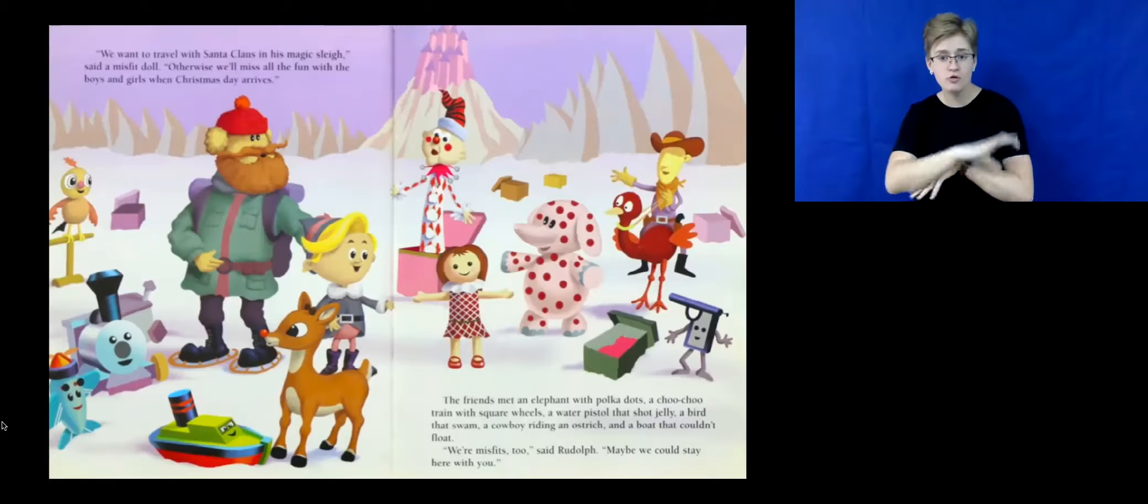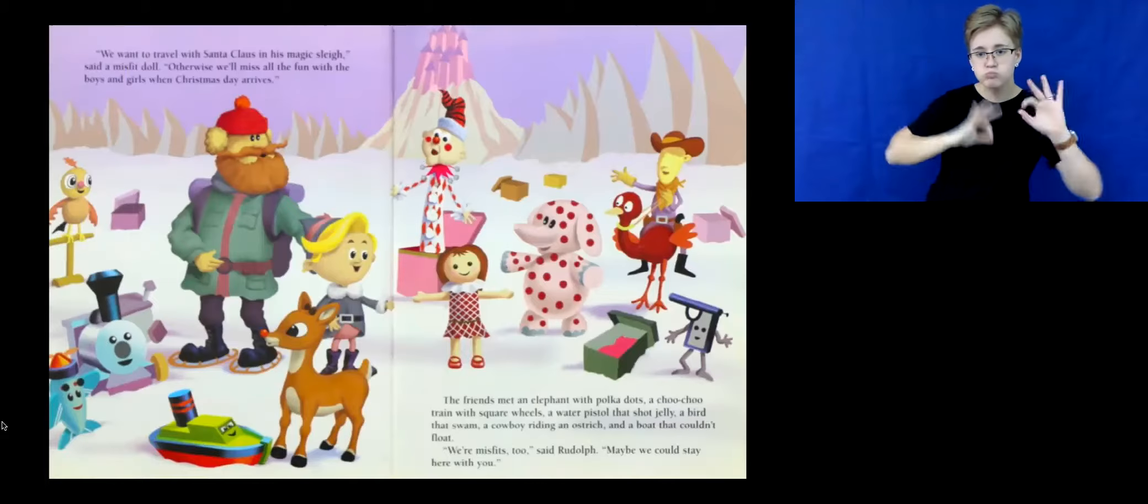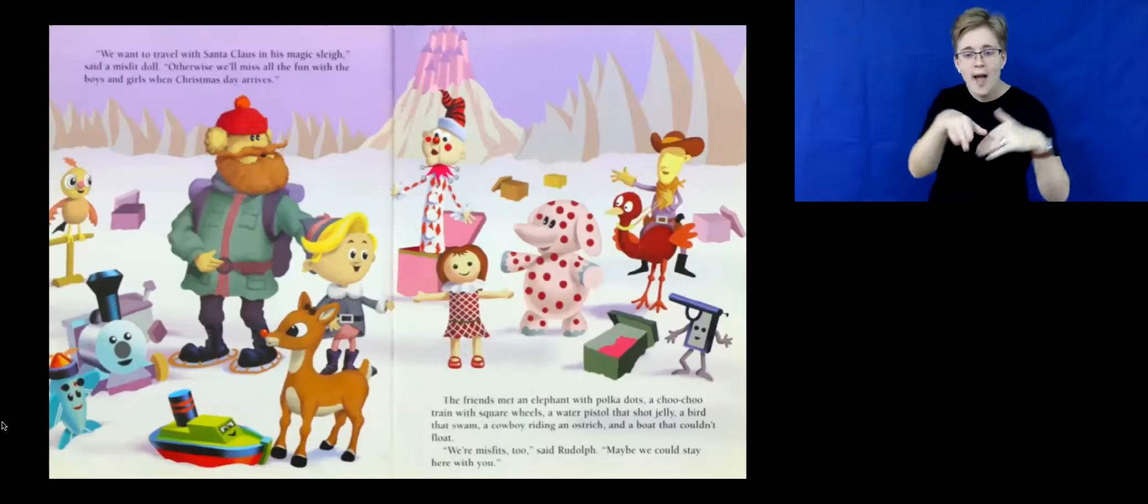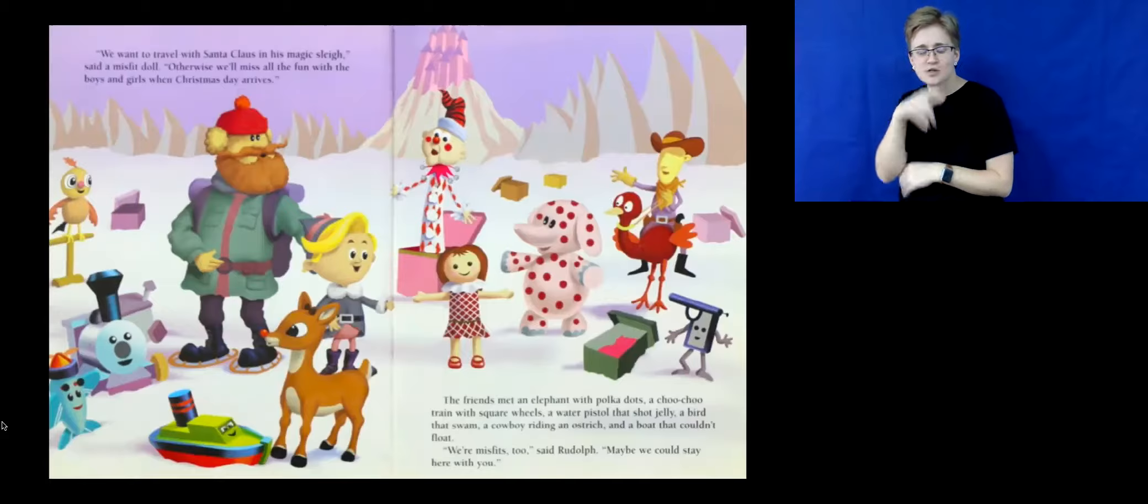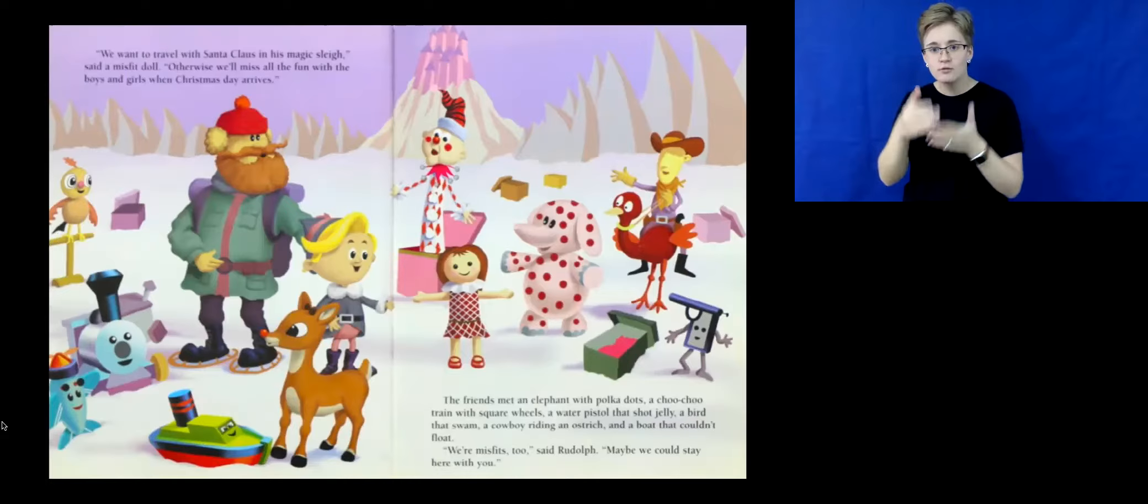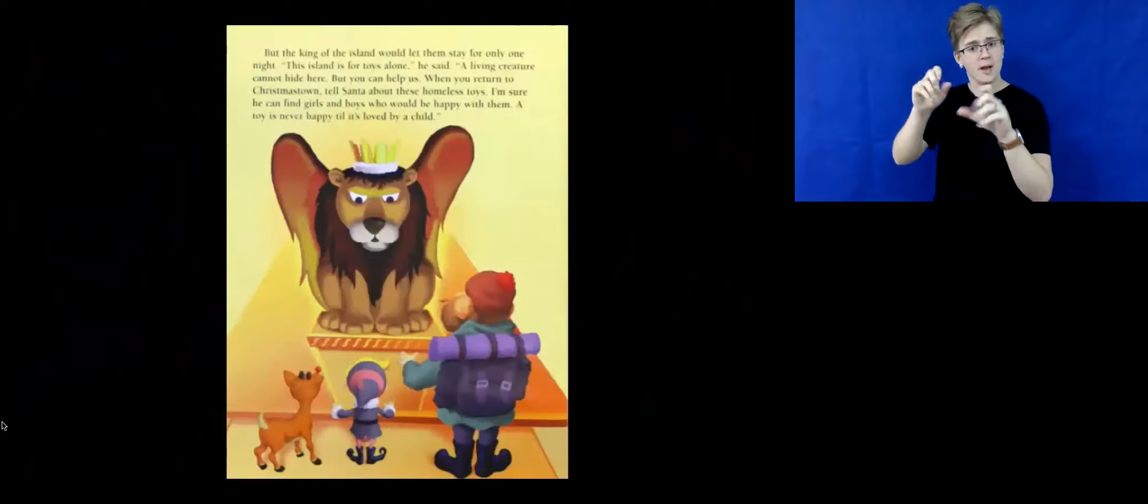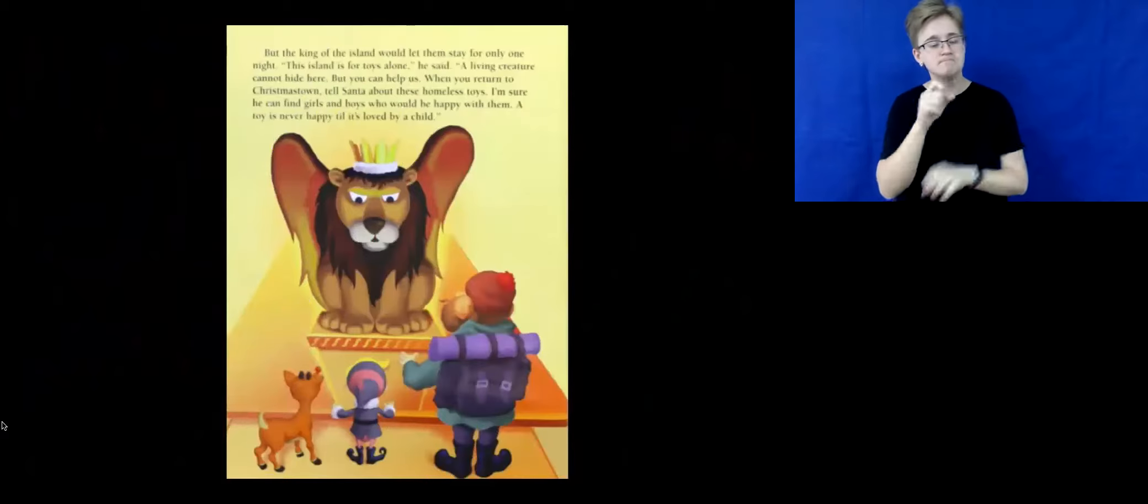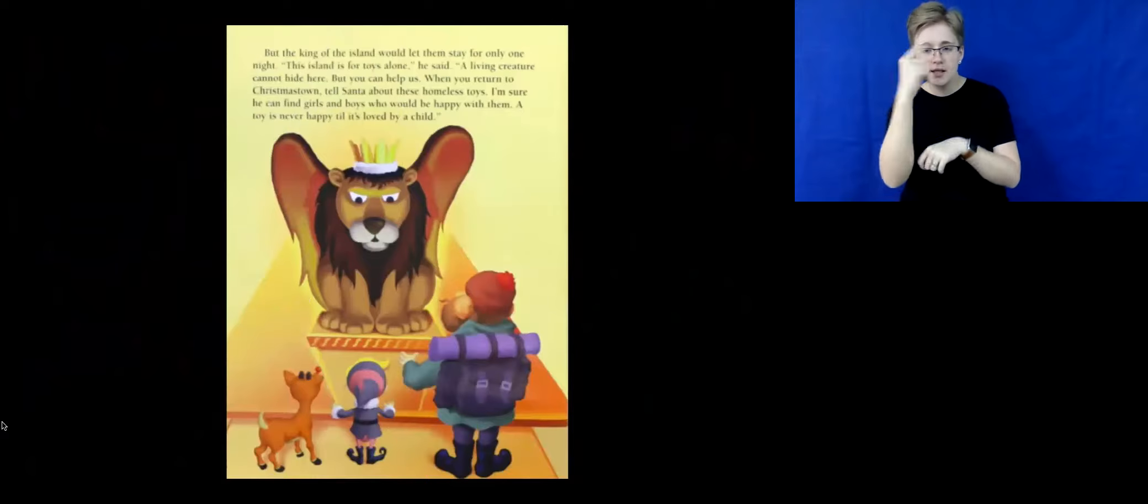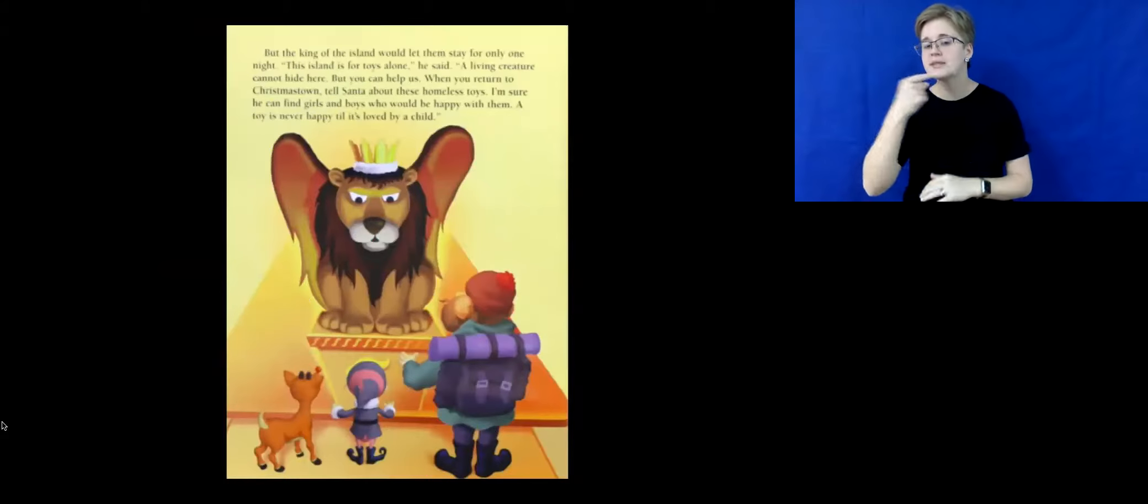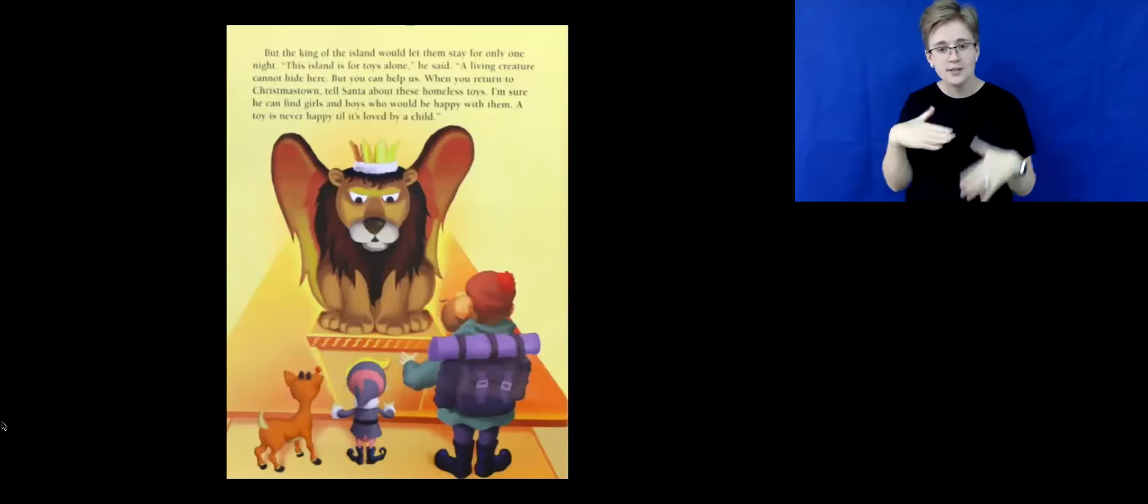The friends met an elephant with polka dots, a choo-choo train with square wheels, a water pistol that shot jelly, a bird that swam, a cowboy riding an ostrich, and a boat that couldn't float. We're Misfits too, said Rudolph. Maybe we could stay here with you. But the king of the island would let them stay for only one night. This island is for toys alone, he said. A living creature cannot hide here. But you can help us. When you return to Christmastown, tell Santa about these homeless toys. I'm sure he can find girls and boys who would be happy with them. A toy is never happy till it's loved by a child.